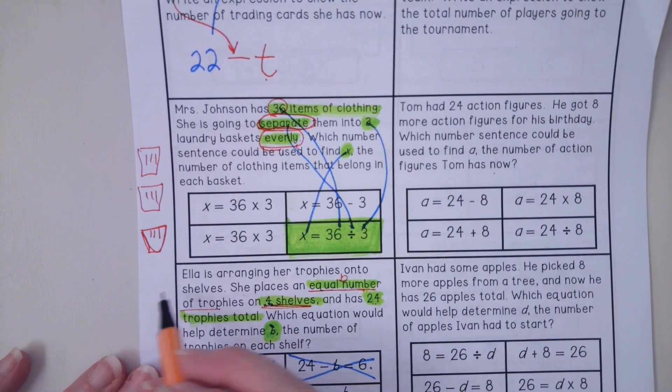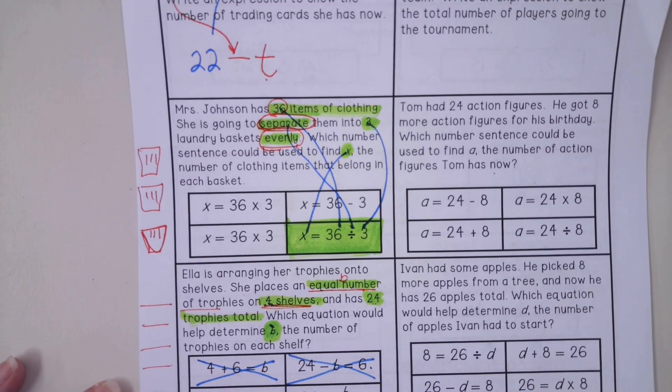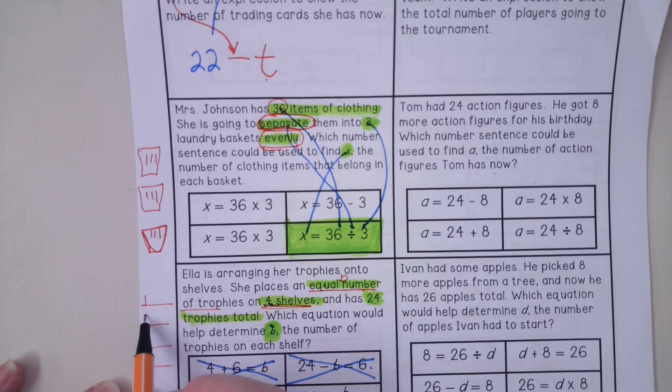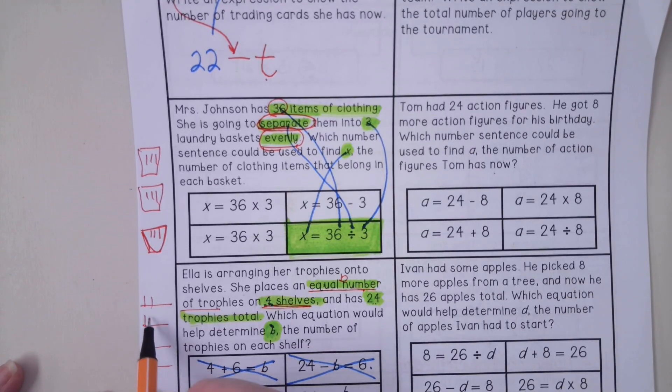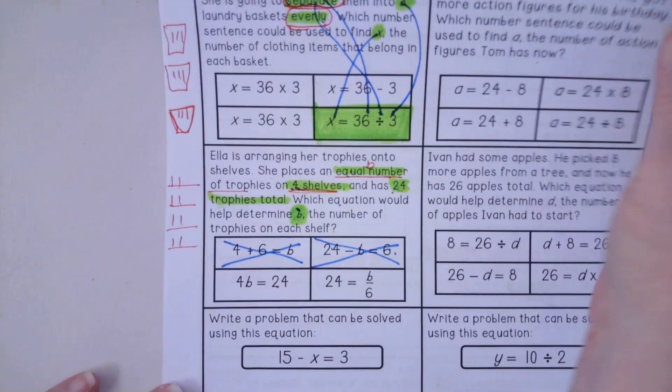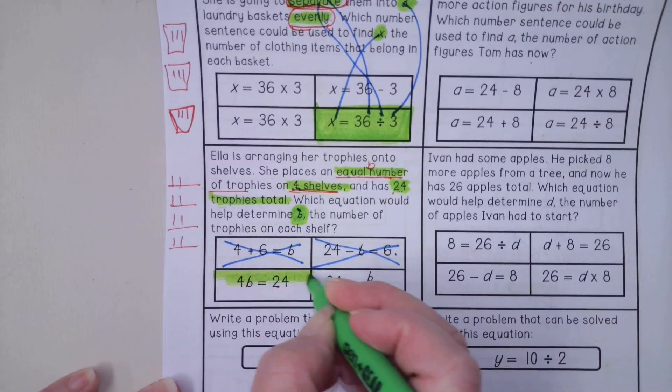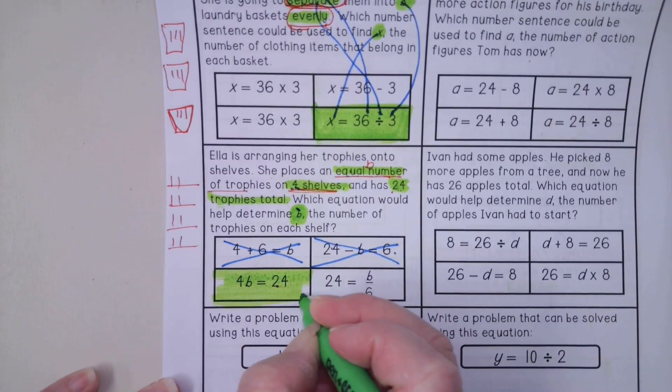But imagine, again, I would imagine myself having four shelves, and again, because I have equal numbers, I know that I'm going to put one, two, three, four, one, two, three, four, until I get to 24.